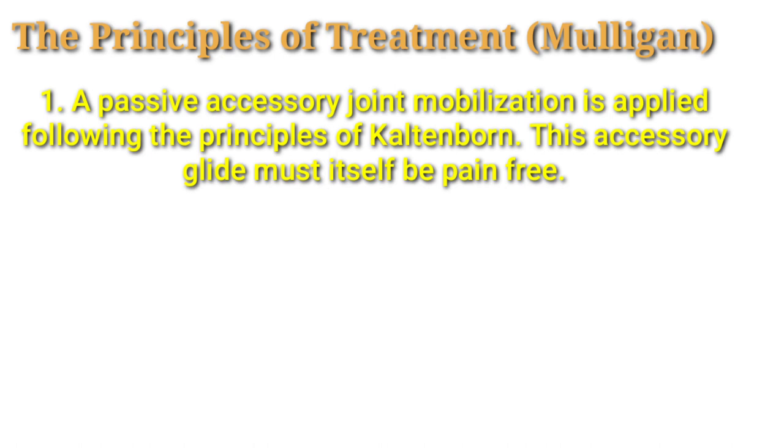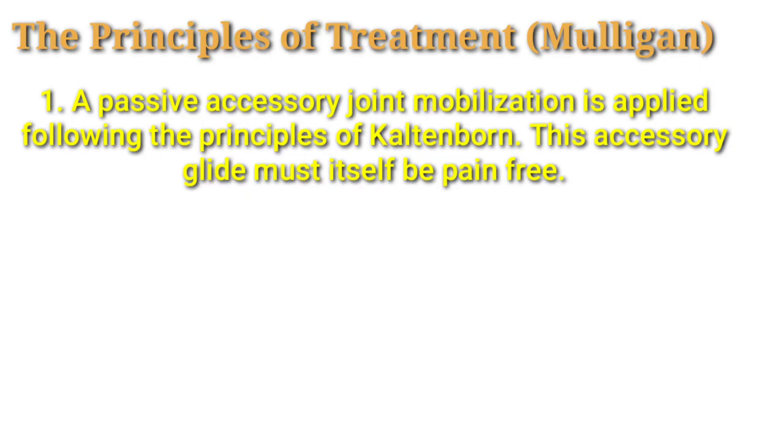Now, we will talk about the principles of treatment according to Mulligan. Number one: passive accessory joint mobilization is applied following the principles of the Kaltenborn. This accessory glide must itself be pain-free. According to Mulligan, if you apply passive accessory joint mobilization, then it should always be pain-free.